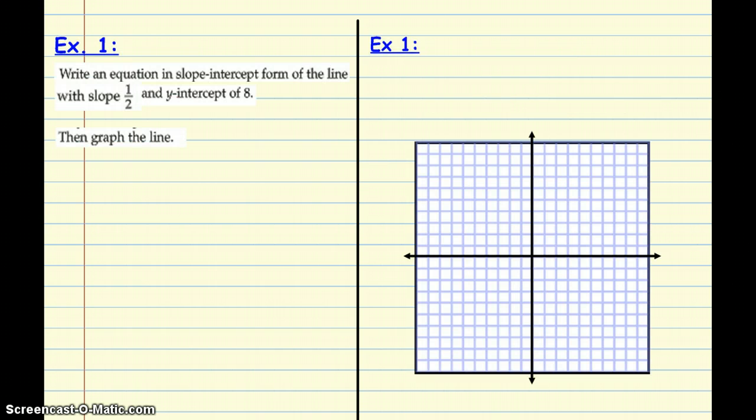All right, so let's take a look at example one. We're going to write an equation in slope-intercept form and then we're going to graph that line. So, quick reminder, slope-intercept form is y equals mx plus b, and you look to see what's given.